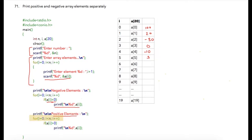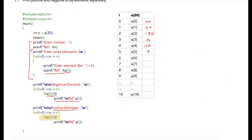The second for loop will iterate through all the array elements and check the condition that a[i] is greater than 0. If the condition is true, that means the array element is a positive number and we will print it.